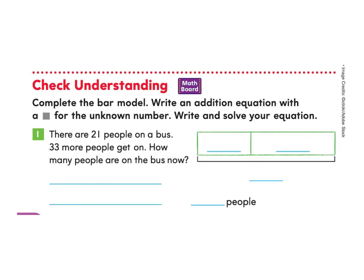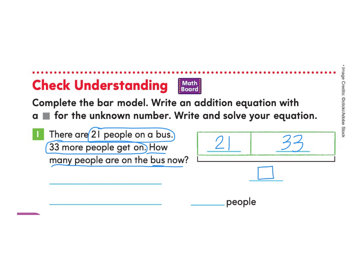Great work. Let's check for understanding. Complete the bar model, write an addition equation with a square for the unknown number, then write and solve your equation. There are 21 people on a bus. 33 more get on. How many people are on the bus now? We know there are 21 people and 33 more get on. We're looking for the unknown when we put 21 and 33 together, so we write in the unknown for the total on our bar model. The equation is 21 plus 33 equals the unknown.